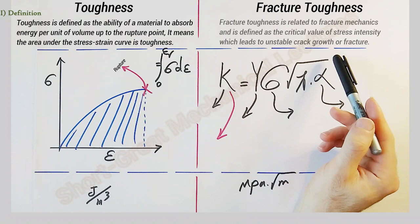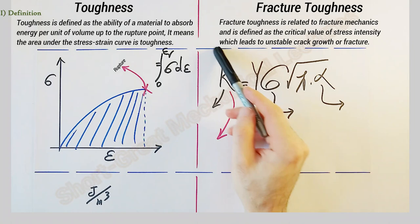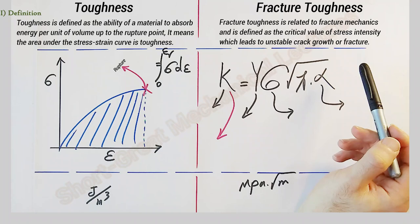However, fracture toughness is related to fracture mechanics and is defined as the critical value of stress intensity which leads to unstable crack growth or fracture.